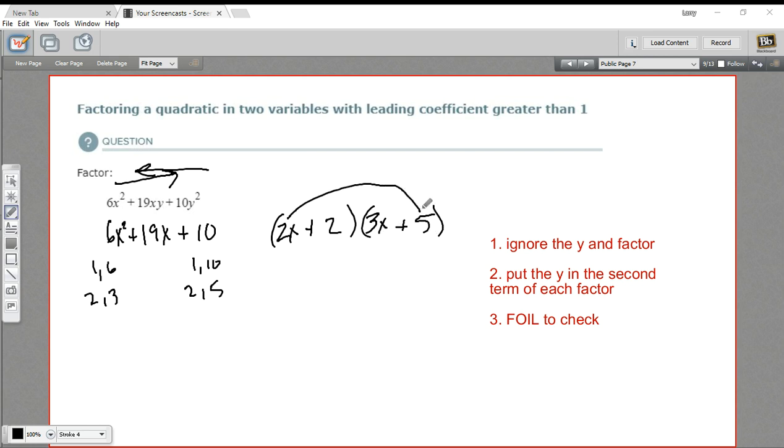If I put in a 2 here and a 5 here, I'd have 2x times 5. That'd be 10x. And 2 times 3 would be 6x. So that's 16. That's not 19.